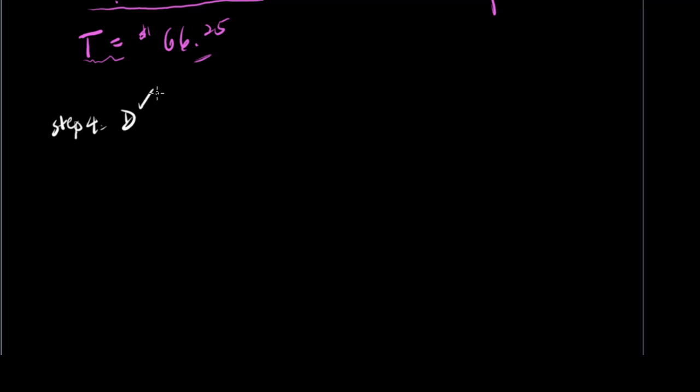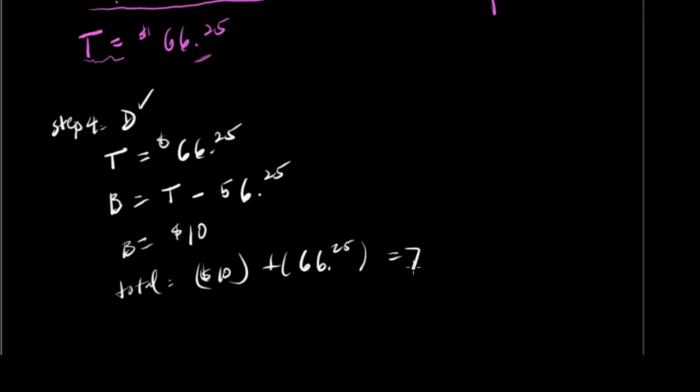Step 4 is our double check. We were told that, or we solved actually, the bat is $66.25. And we know that the ball is cheaper than the bat by $56.25. So from here, we know that the ball is $10. Now when we said the total we spend was the ball plus our bat, which is $66.25. So all together, we spent $76.25.